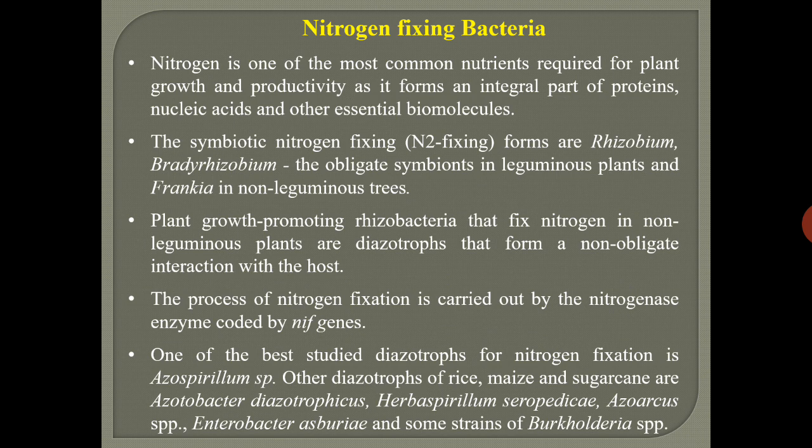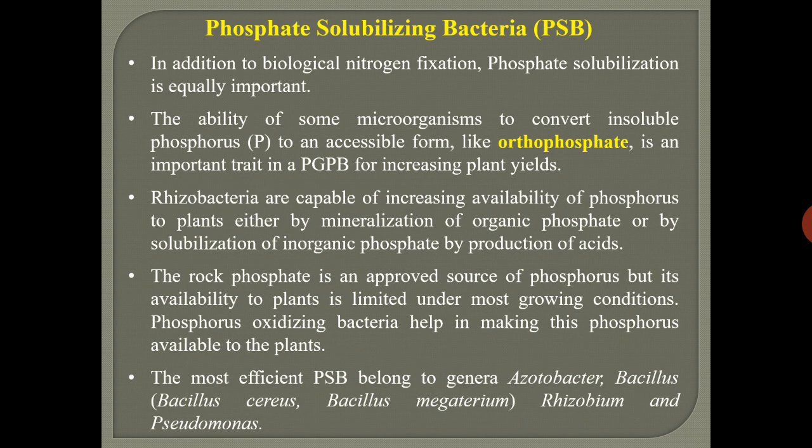Others which can improve the growth of rice, maize, and sugarcane include Azotobacter, Gluconacetobacter diazotrophicus, Herbaspirillum seropedicae, Azoarcus species, and Enterobacter species, as well as some strains of Burkholderia species. Next, phosphate solubilizing bacteria — in addition to nitrogen, plants also require phosphate. This phosphate is not readily available in nature; it is either present in unavailable organic form or insoluble inorganic form, such as rock phosphate.